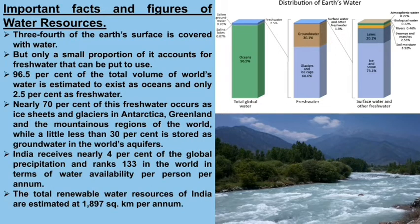Those forms of water cannot be directly used because they are in the form of glaciers found on Greenland and the Antarctic continent. The remaining 1.3% of fresh water is what is actually available for us.